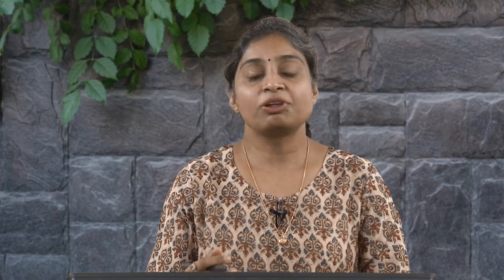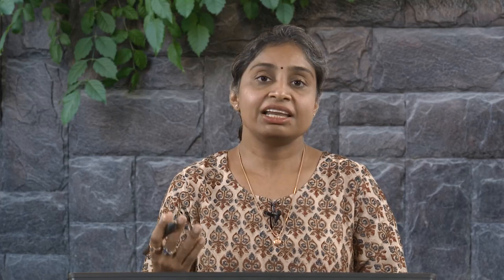The third chapter covers lab testing of rocks. We will learn about determining physical properties, then how unconfined compressive strength is obtained using the unconfined compression test. Unlike soil, rock possesses tensile strength, so we will discuss how to determine tensile strength properties. Then shear tests including oblique shear test and triaxial test. The degree of weathering is determined using the slake durability test. Finally, we will analyze the stress-strain response of rocks.